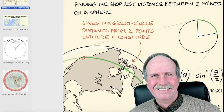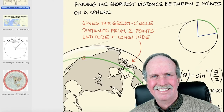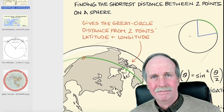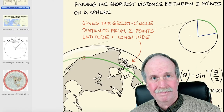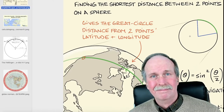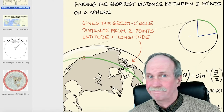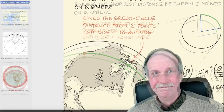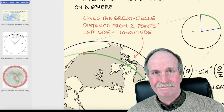Bob the Science Guy is using the Haversine formula, and he's stating that the distances he's been able to measure on the surface of a globe match reality, whereas the straight-line flat Earth distances don't. This is what he's saying. But we all know that the shortest distance between two points is a straight line.